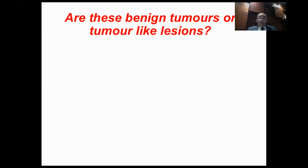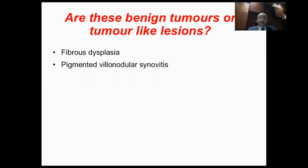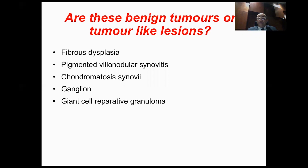At the end, a note on certain lesions considered benign tumors that are actually tumor-like conditions. These include fibrous dysplasia, pigmented villonodular synovitis, synovial chondromatosis, ganglia, giant cell reparative granuloma, and Norris lesions. They are not actual tumors; they're tumor-like conditions, though in many classifications they are grouped as benign tumor lesions.